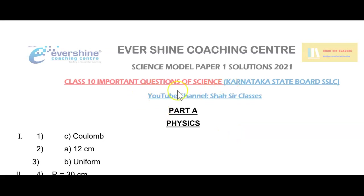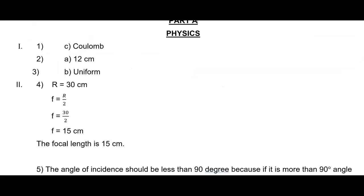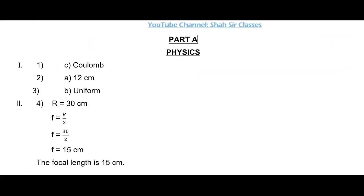See children, this is very important questions as well as this is the Model Paper No. 1 Solutions and here we have solved the complete solutions of this paper. As you can see here, this is Part A Physics, the first question option C is the answer. As you can see the answers are on the screen, you can keep next to you your question paper and follow these answers and copy down all these answers and make sure that you can practice these all answers without fail.